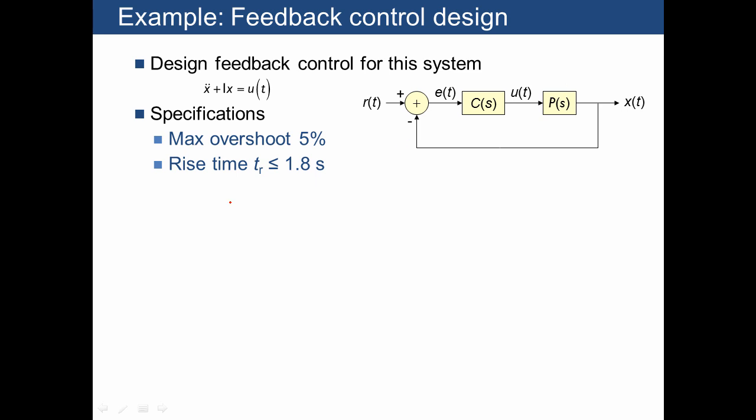Let's apply those specifications to this design problem here, where we're given the same plant that we saw before, which has transfer function s squared plus 1. But now we're given specifications in the time domain, including a maximum overshoot of 5 percent and a rise time of no more than 1.8 seconds.